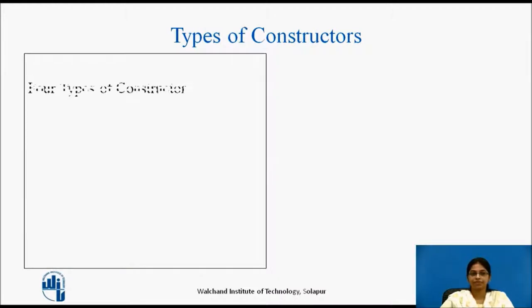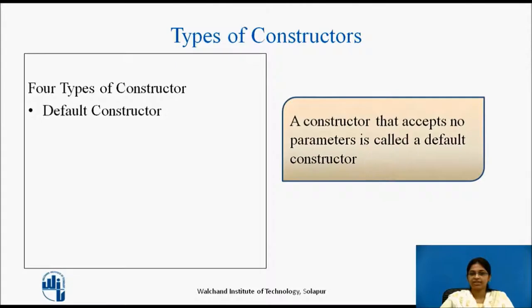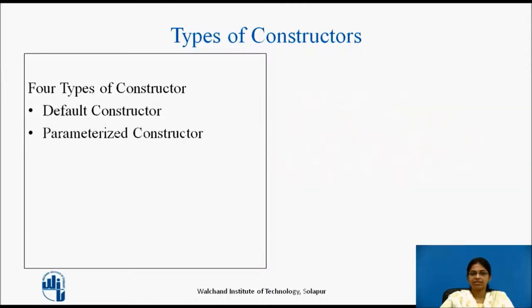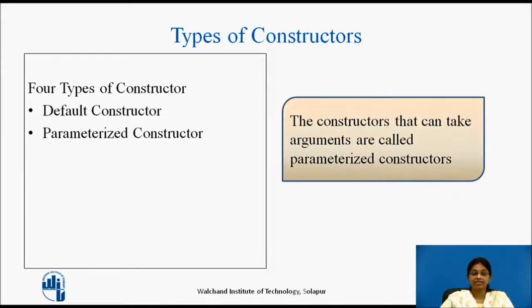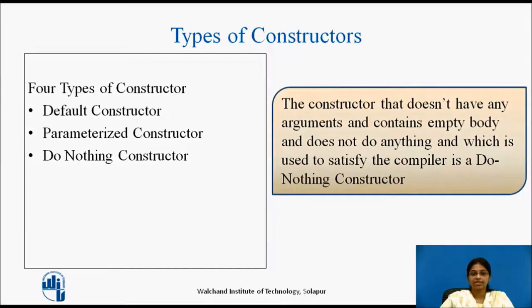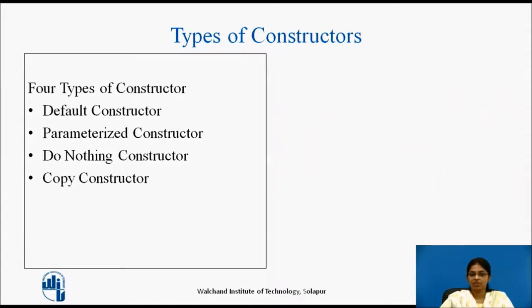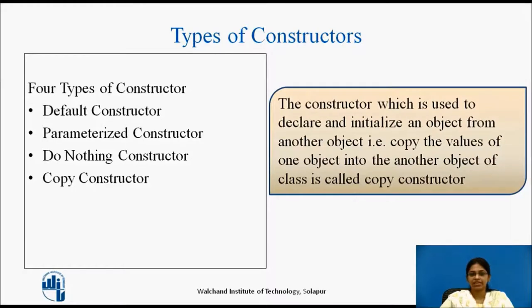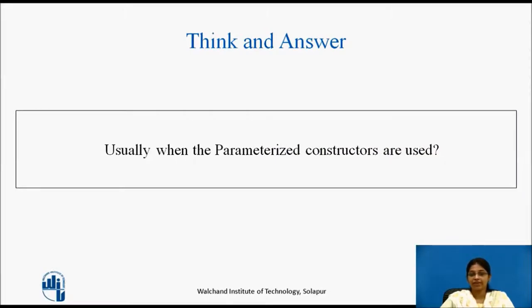There are four types of constructors. A default constructor accepts no parameters. A parameterized constructor can take arguments. A do-nothing constructor has no arguments, an empty body, does nothing, and is used to satisfy the compiler. A copy constructor is used to declare and initialize an object from another object — that is, to copy the values of one object into another object of the same class. Think about when parameterized constructors are typically used; pause the video and note down your answer.